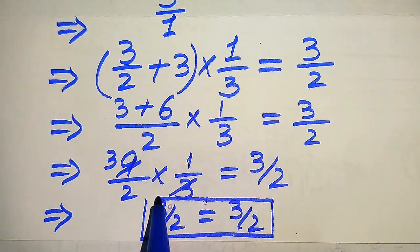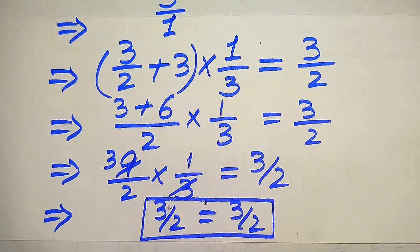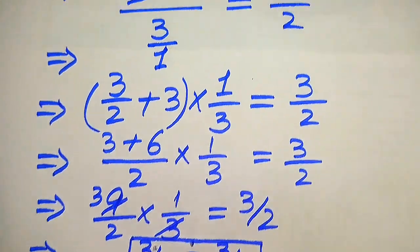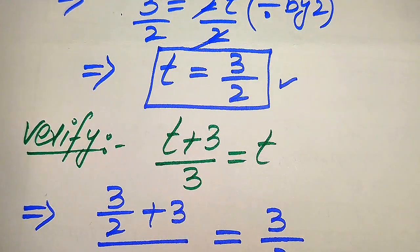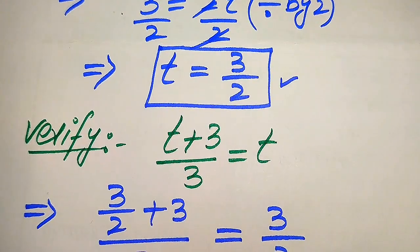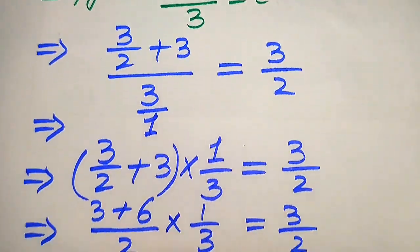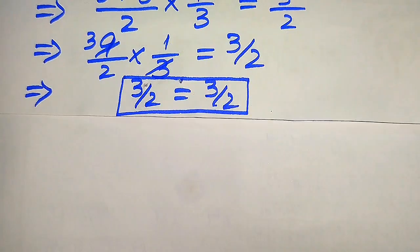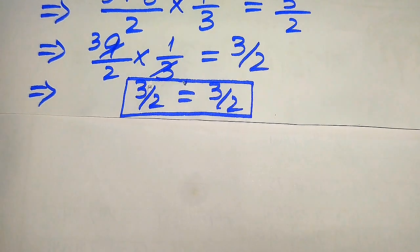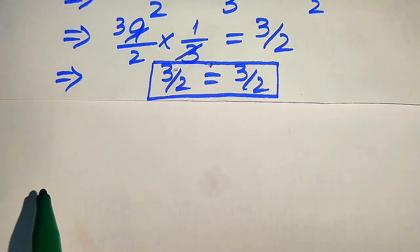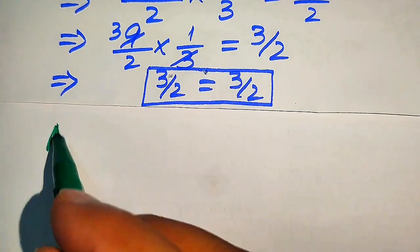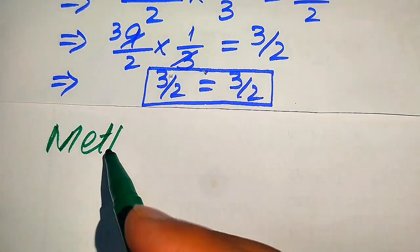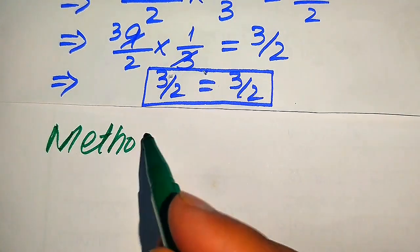Both sides are equal. This shows that the value t equals 3 over 2 satisfies our given equation, so this is the final answer from the first method. Now we move towards our second method.